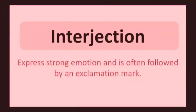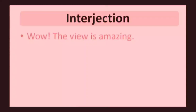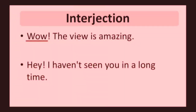Interjection. Interjection expresses strong emotion and is often followed by an exclamation mark. Examples: wow, oh. Wow! The view is amazing. The interjection in this sentence is wow. Hey! Haven't seen you in a long time. The interjection here is hey.